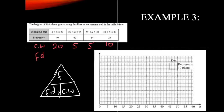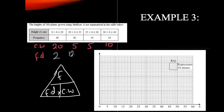You'll probably get this on a calculator paper if the numbers aren't particularly nice. 40 divided by 20 is 2. 62 divided by 5 is 12.4. 54 divided by 5 is 10.8. And 24 divided by 10 is 2.4. So now I need to think quite carefully about what scale I'm going to use.